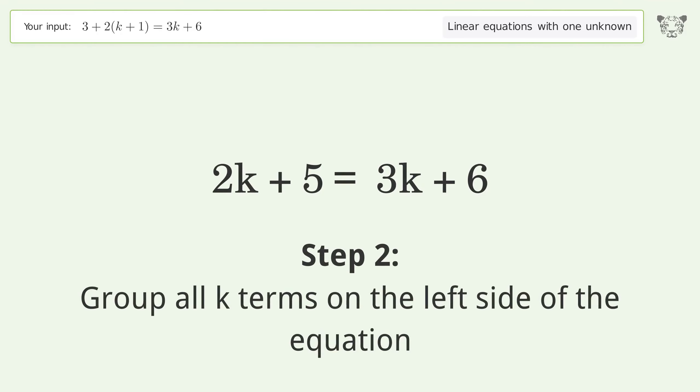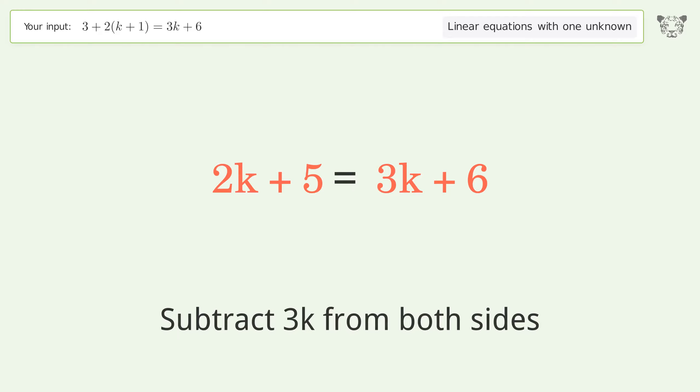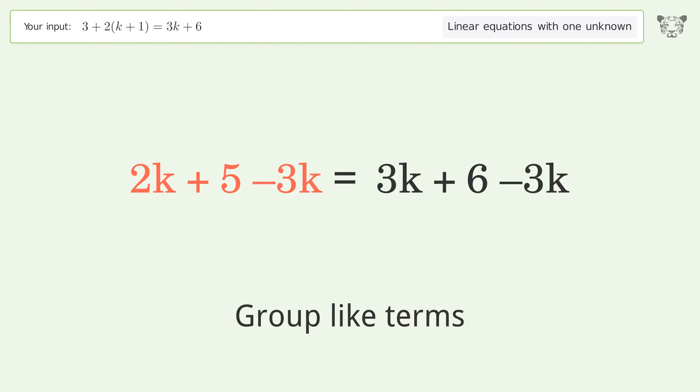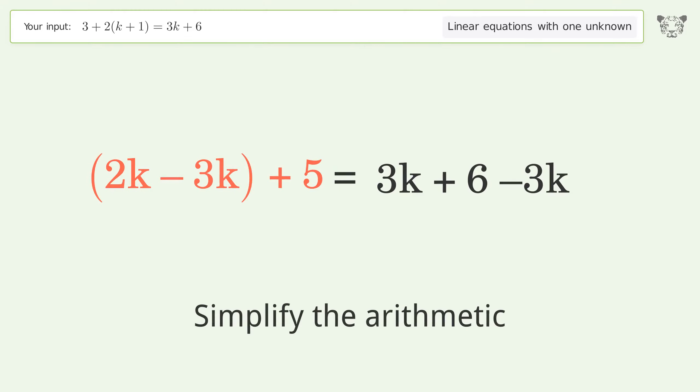Group all k terms on the left side of the equation. Subtract 3k from both sides. Group like terms. Simplify the arithmetic.